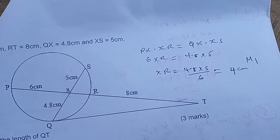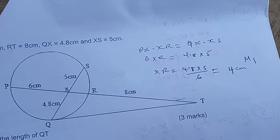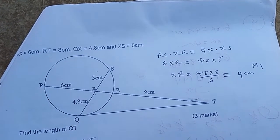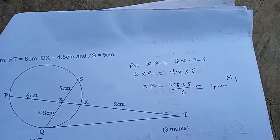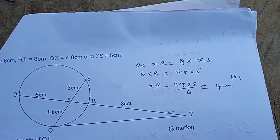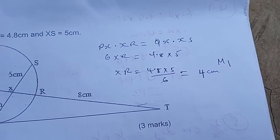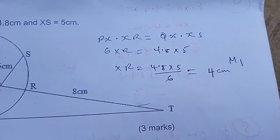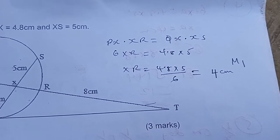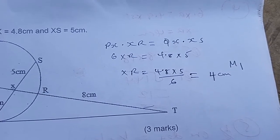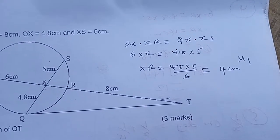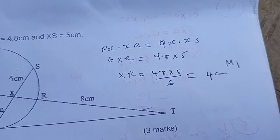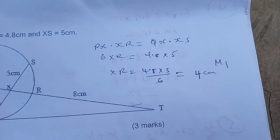XR is not given. It's only RT that is given to be 8 cm, so we need to find XR. Now, let XR be R. We substitute PX with 6, so it's going to be 6XR equals QX times XS, which is 4.8 times 5. So, XR is 4.8 times 5 divided by 6, which is equivalent to 4 cm.